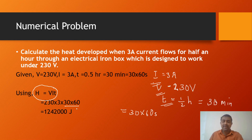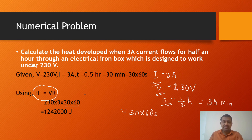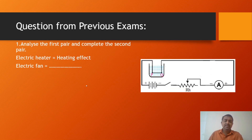That is the answer. The voltage, potential difference, current and time give us our heat equation. If we know current and resistance, we use H = I²Rt. If we have constant voltage and resistance, we use H = V²t / R.